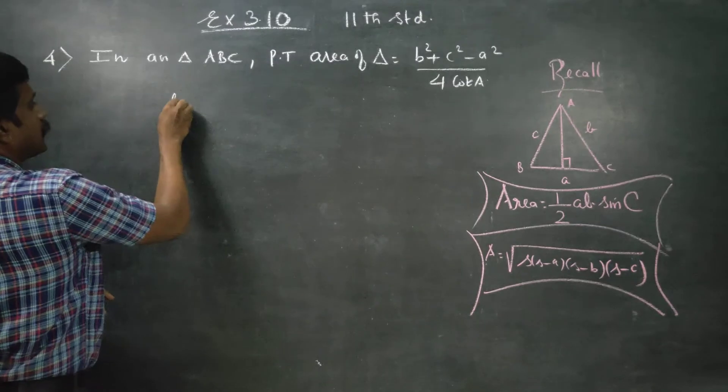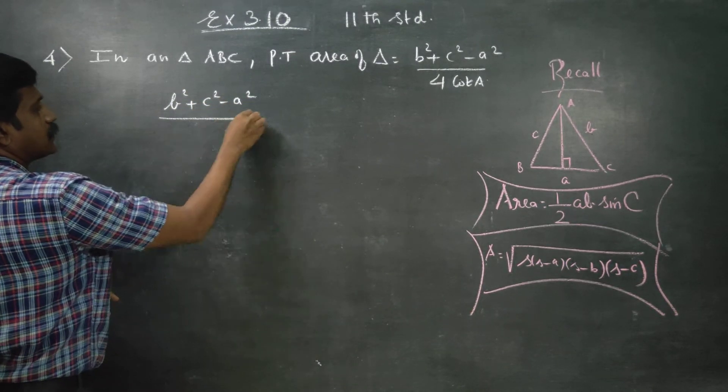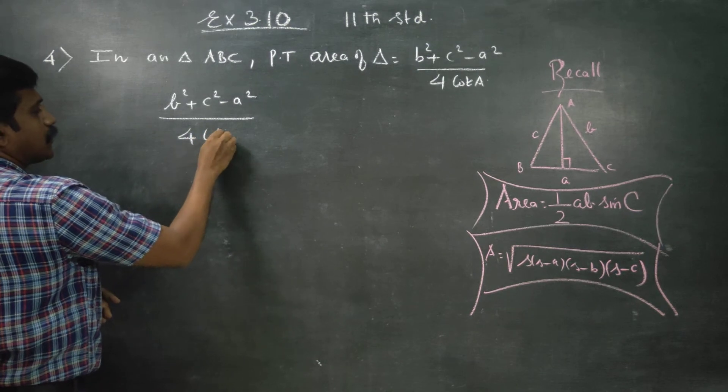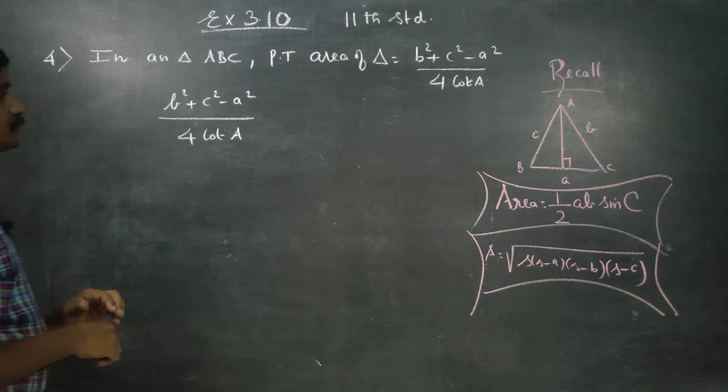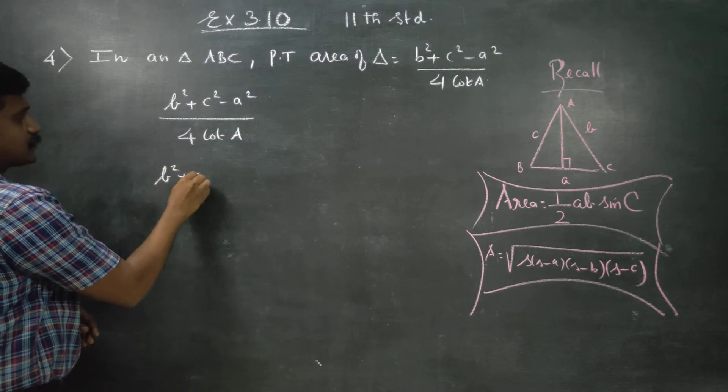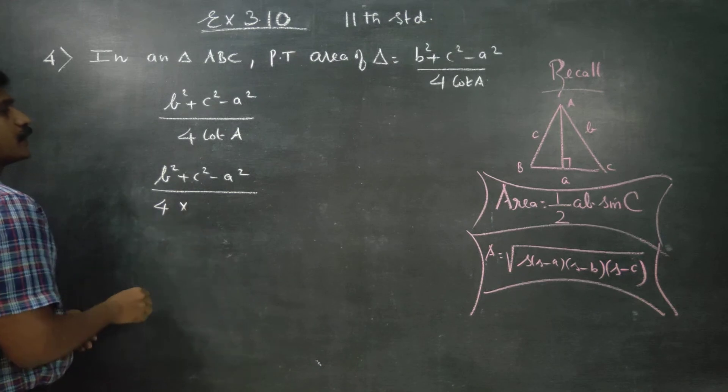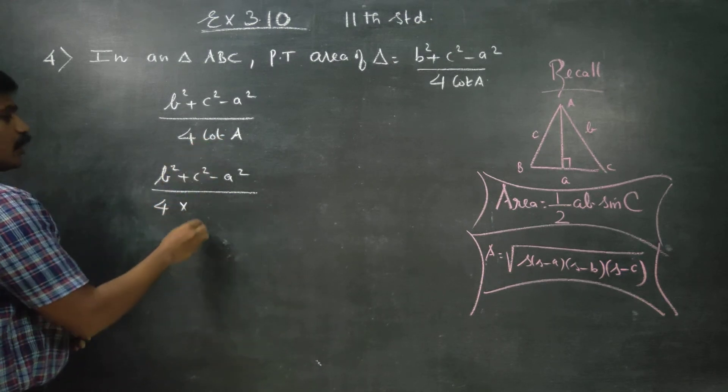I will start with b square plus c square minus a square by 4 cot a. Cot a is the starting point. b square plus c square minus a square divided by 4. What is my cot?